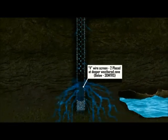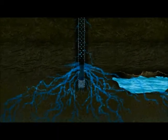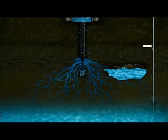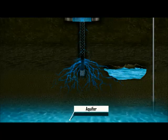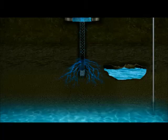Placed to a depth of 30 meters below the ground, the water column and the dual V wire screen facilitate the filtered rain water to reach weathered and permeable zone.